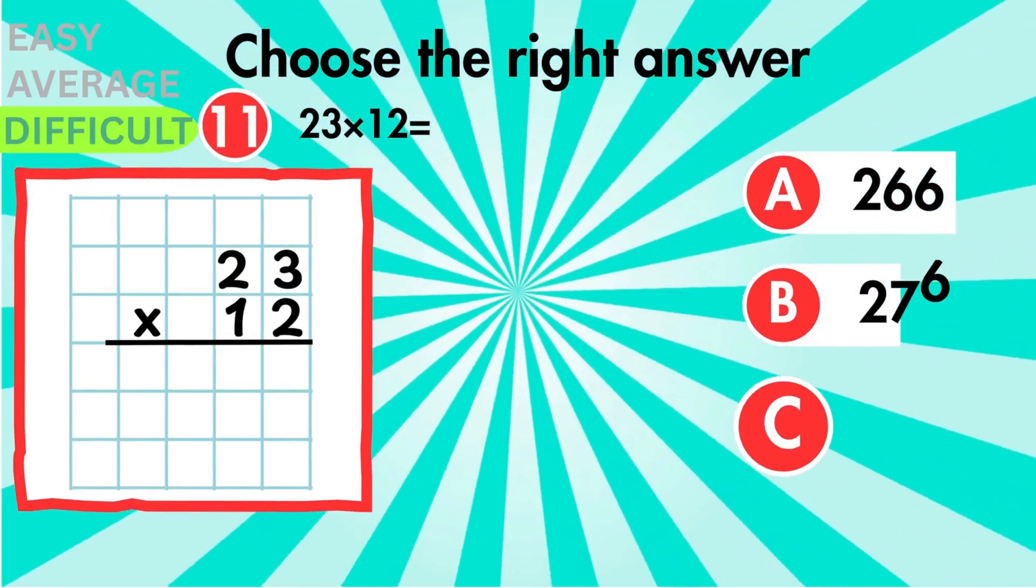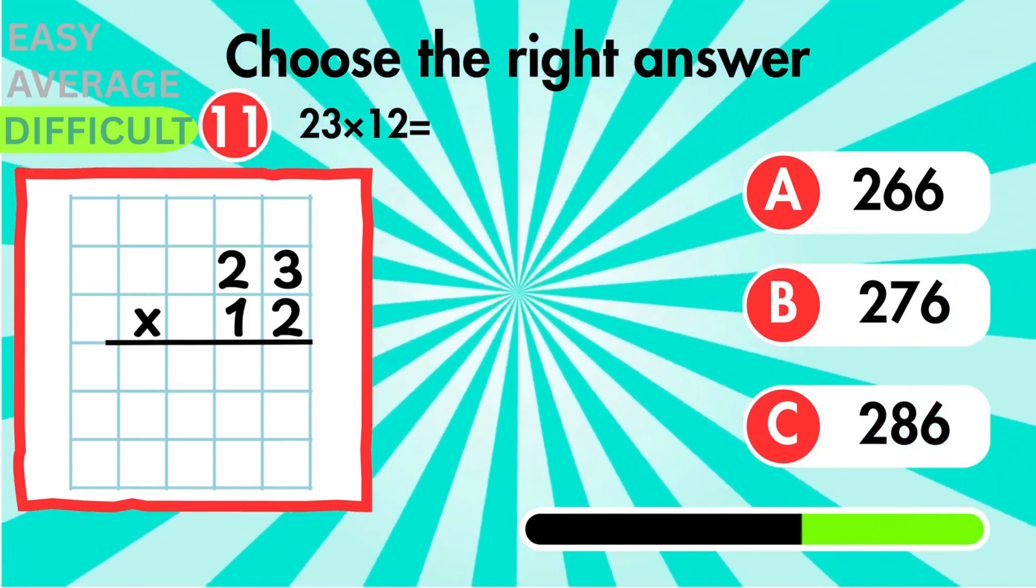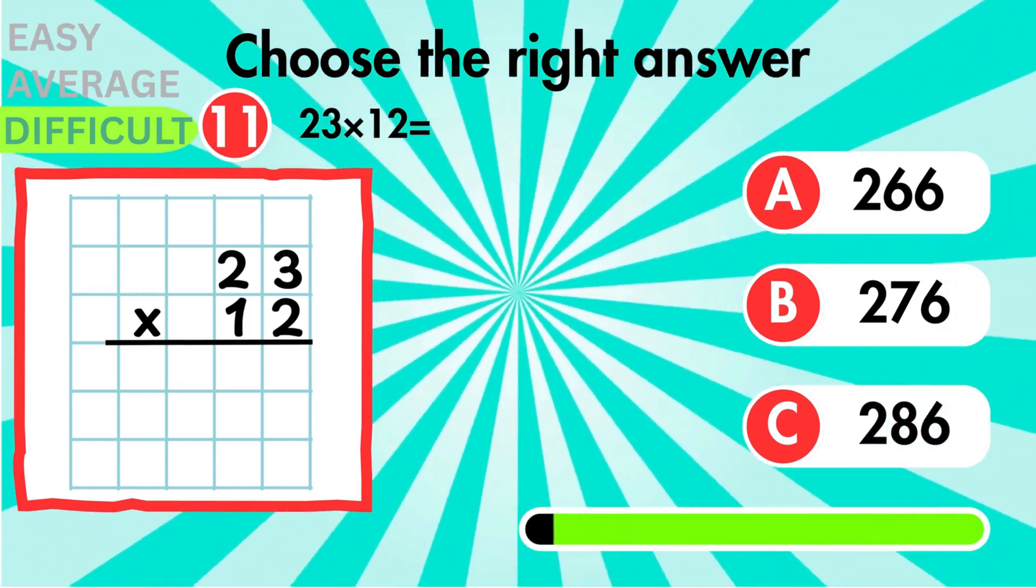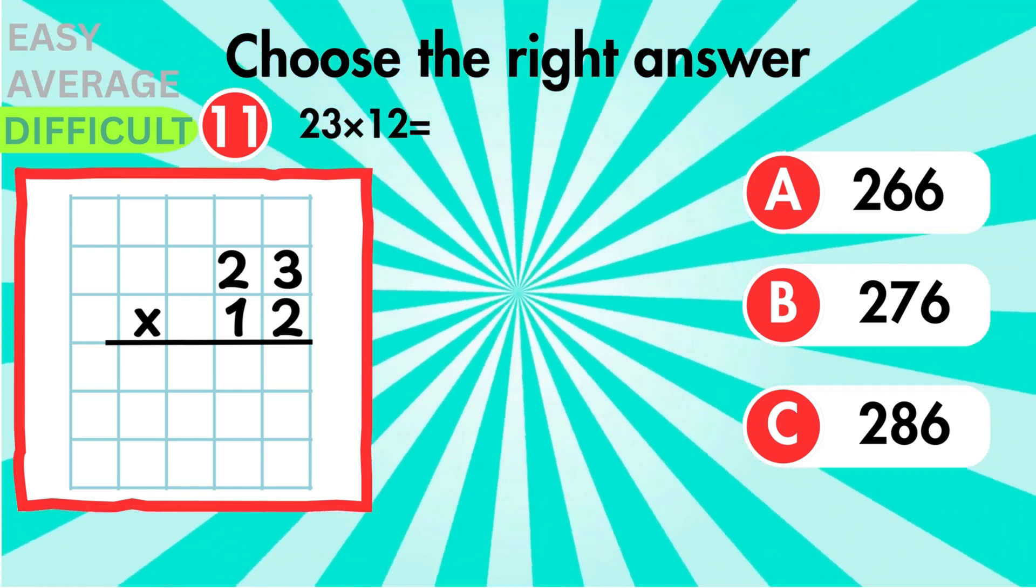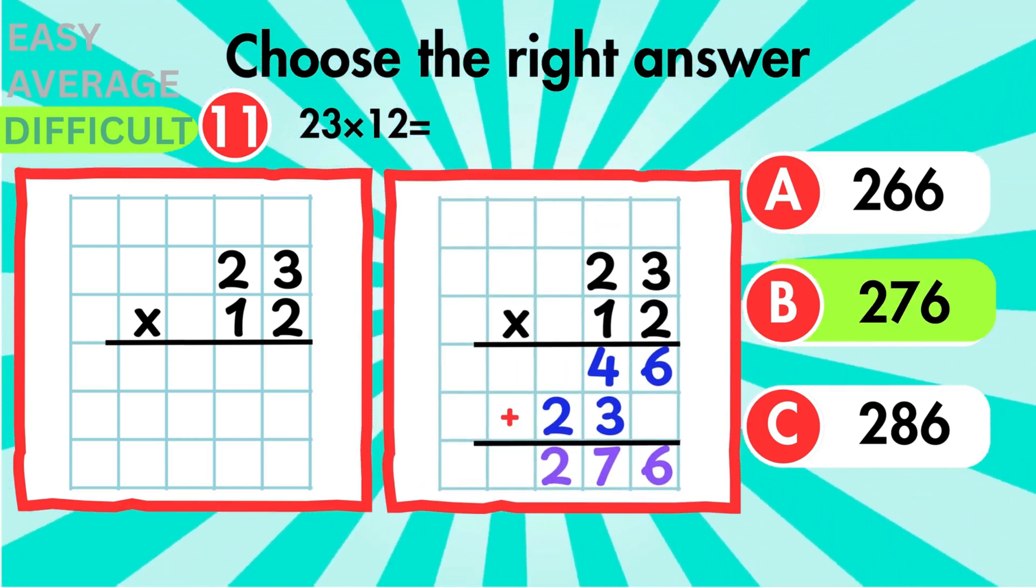Now for a challenge. 23 times 12. All the partial products are large. The correct total is 276.